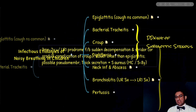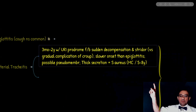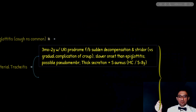Remember that in the case of croup, we do not have this sudden decompensation or stridor. In croup we have mainly hoarseness, though respiratory distress is possible. This is opposite to the more gradual prodrome in croup that happens over around a week. In the course of tracheitis, we have just a couple of days followed by sudden deterioration.